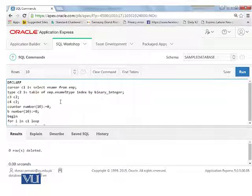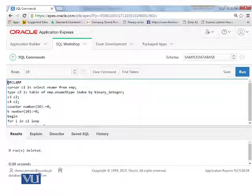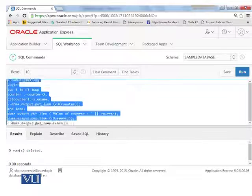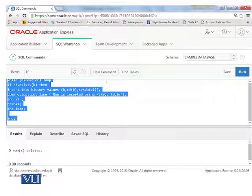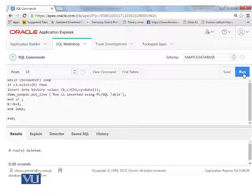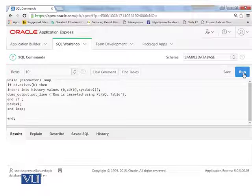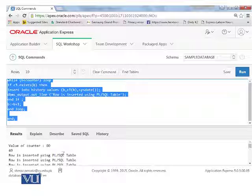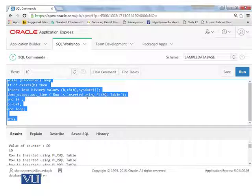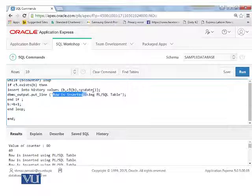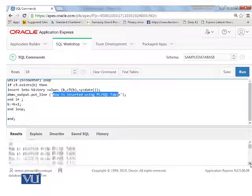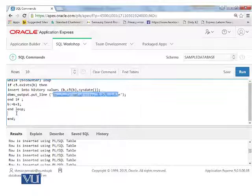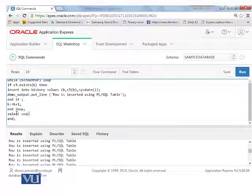So let's try to execute this code, run and we will see how this code is working. If there is error it will throw me an error. So I have run and it has message row is inserting using PLSQL table. This message has directly displayed that means data inserted. So now let me verify from the same table.